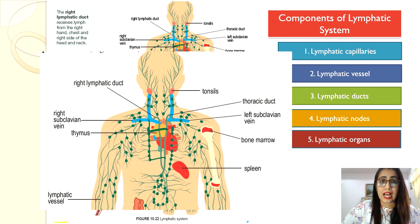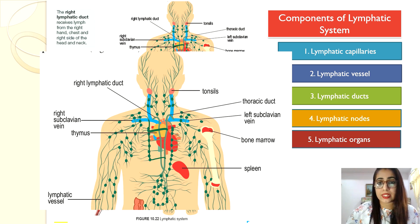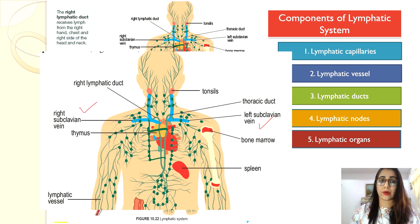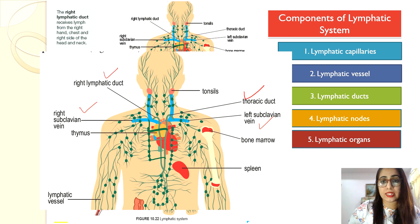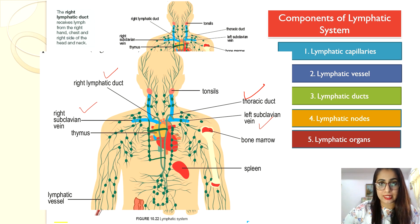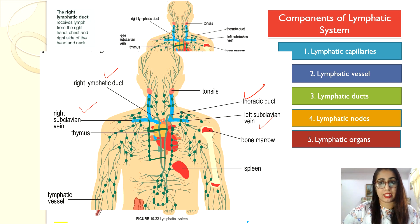Lymphatic ducts are larger lymphatic vessels that channel lymph to the blood circulation through the subclavian veins. There are two types: the thoracic duct, connected to the left subclavian vein, and the right lymphatic duct, connected to the right subclavian vein, both located at the shoulder area.